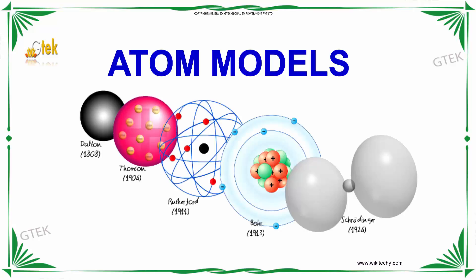Hello, welcome to Jeter Company. Now we are going to talk about atom models. It's going to be real interesting. You can see the atom is found in Dalton, found in 1808 by Dalton, followed by Thomson's theory, and the great Rutherford model, Bohr model, and Schrödinger. Let's see the history and details about the atom models.